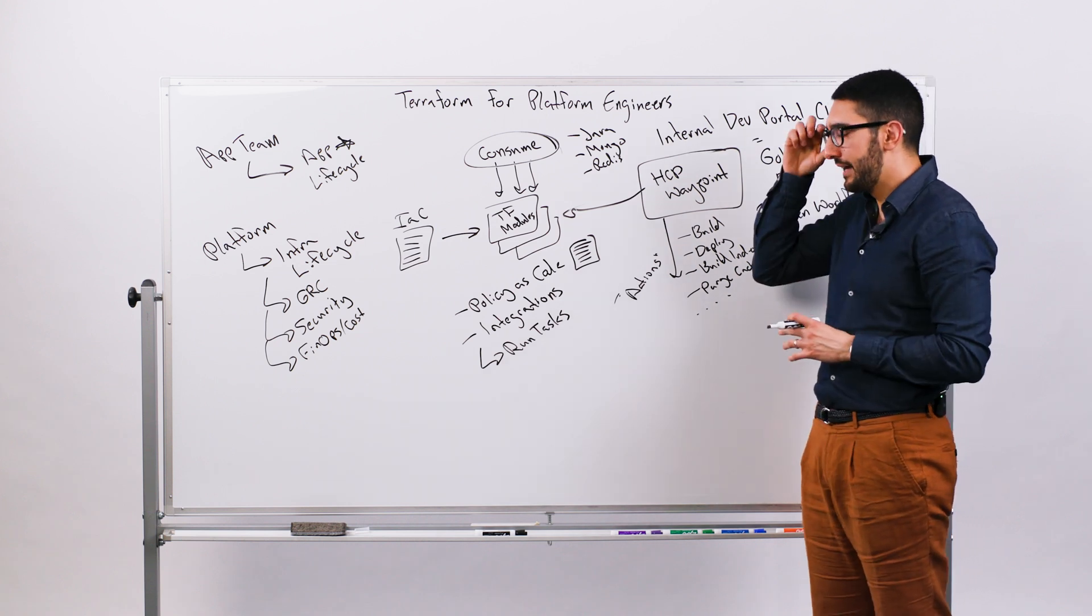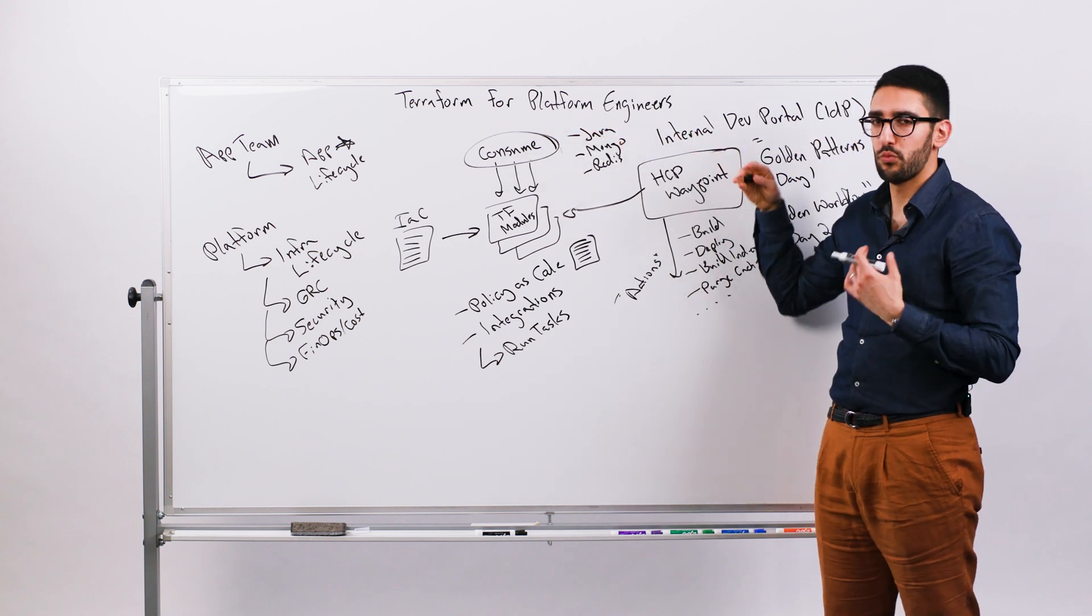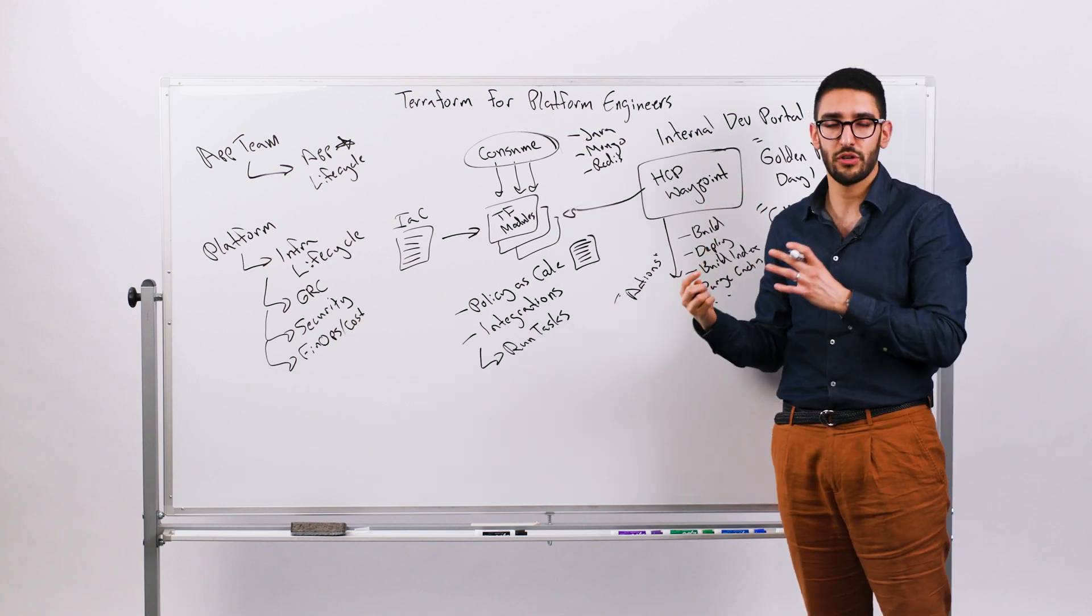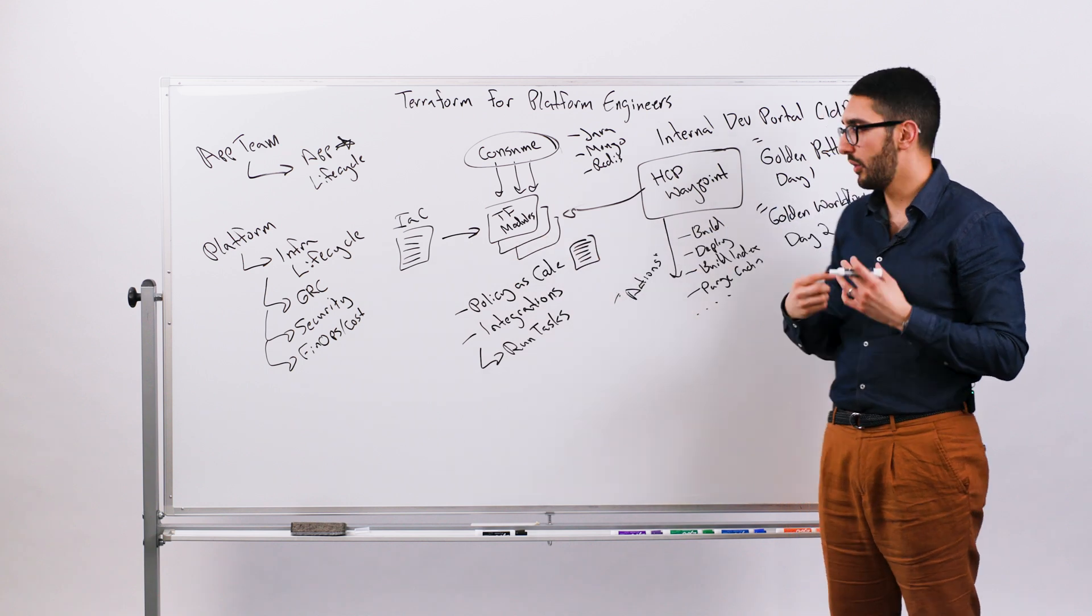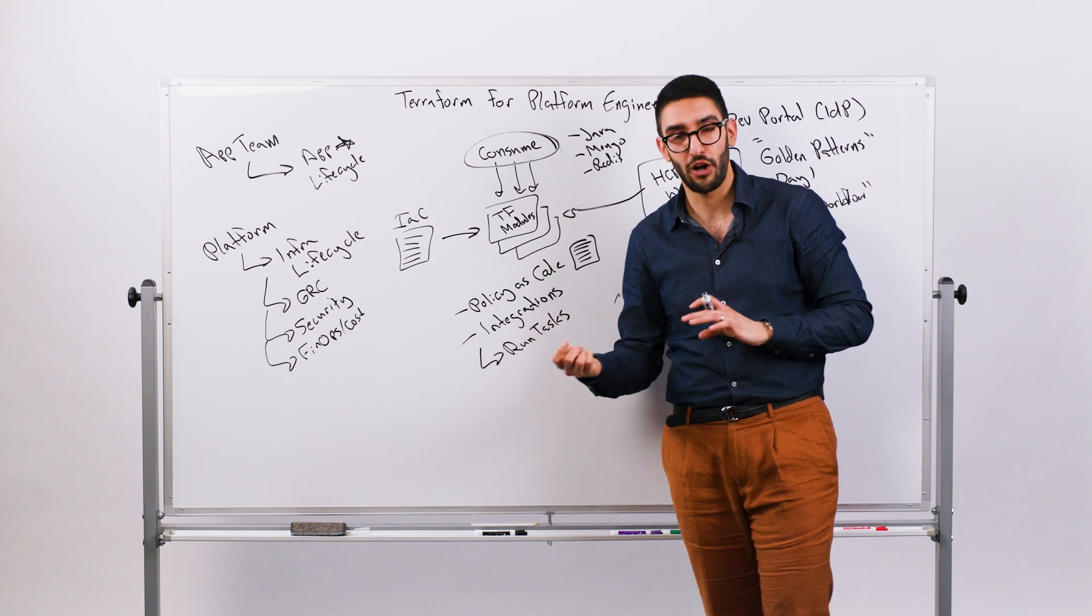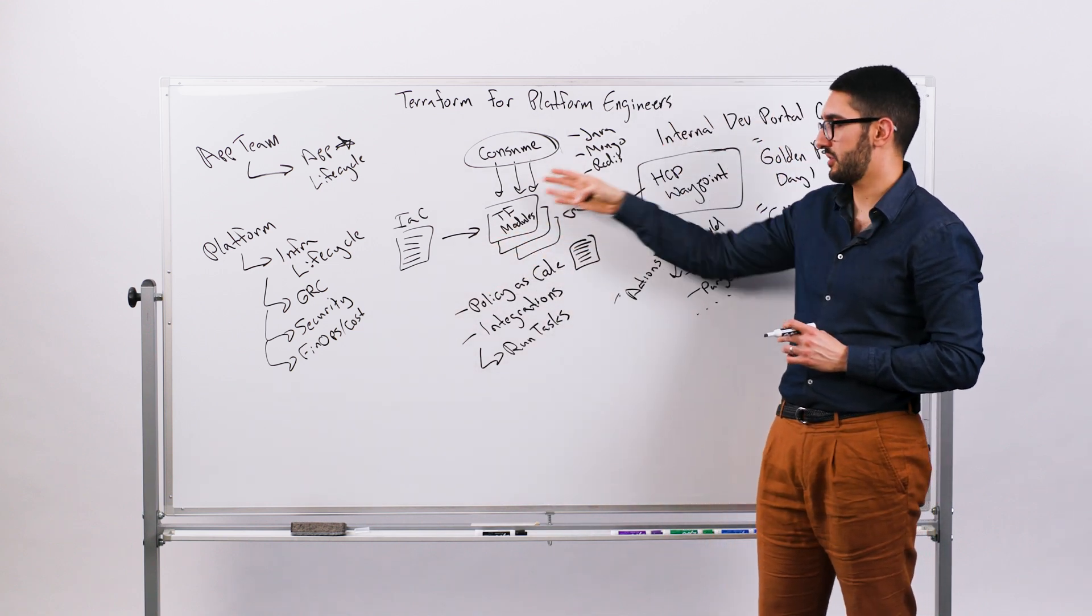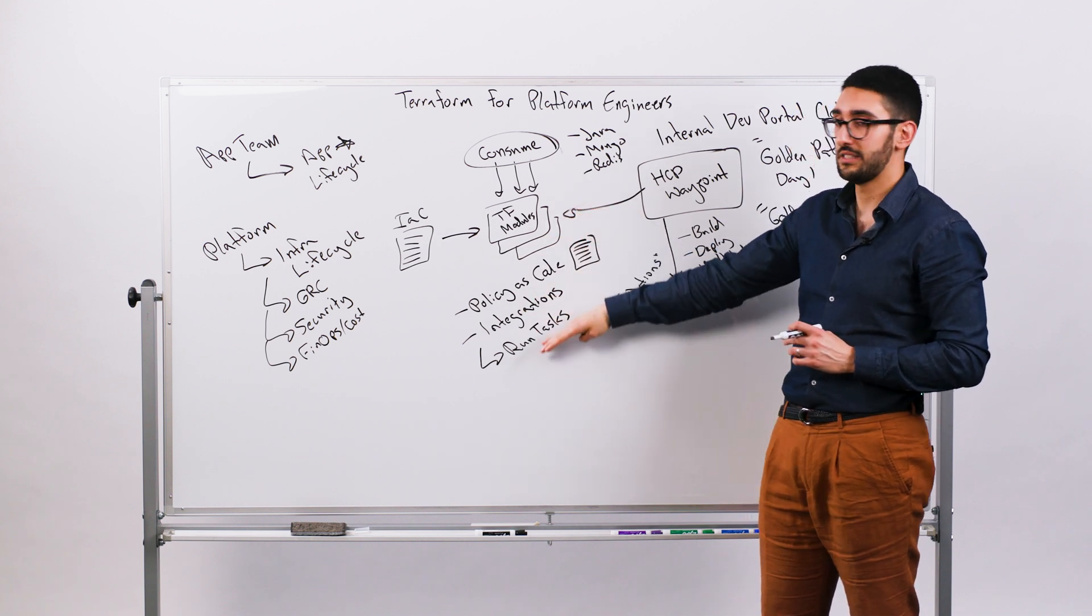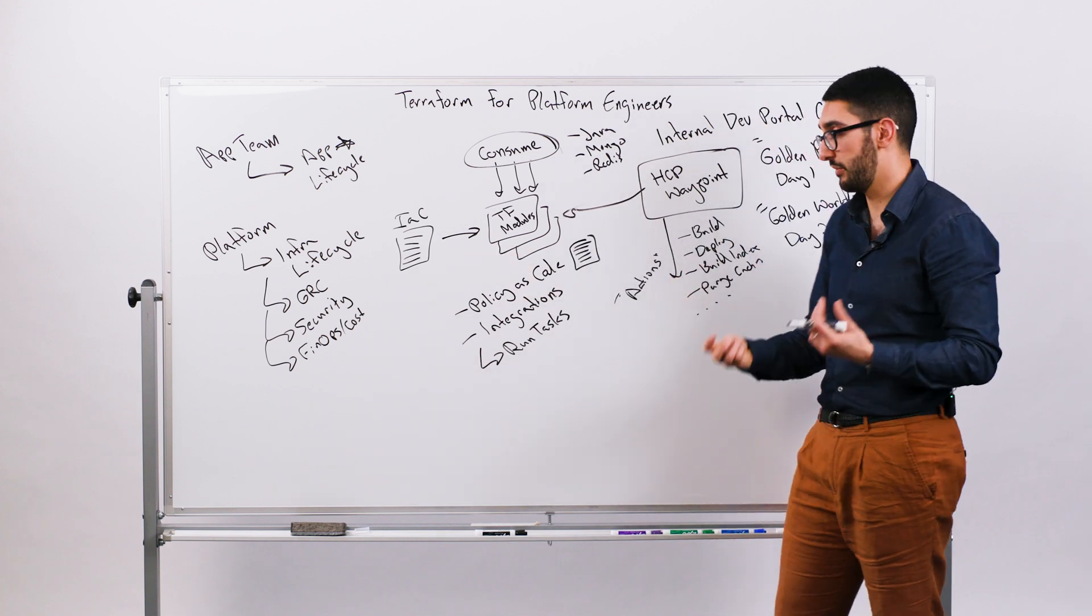And so we want to be able to expose those at a higher level, but then really enable platform teams to define and model them with Terraform fundamentally. So taking a step back, I hope this is a little bit helpful as you think about, when we say Terraform for platform teams, what do we really mean? It's about separation of those two personas. What does an app team want out of infrastructure versus what are the concerns that a platform team or an ops team is solving for? Those include a bunch of other secondary problems around privacy, GRC, security, cost, et cetera.